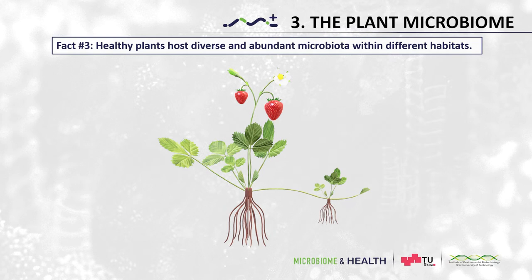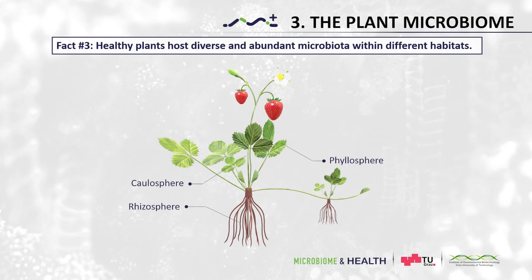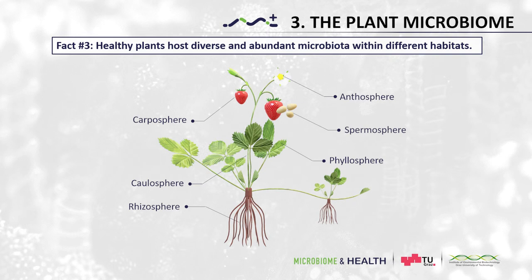The plant compartments are structured in below ground and above ground tissues. Below ground, the rhizosphere is the interface of plant roots and soil, and it represents the most diverse microbial habitat on earth. Above ground tissues are subdivided into the caulosphere (stem and bark), phyllosphere (leaves), anthosphere (flowers), carposphere (fruit), and spermosphere (seeds). Going upwards from roots to phyllosphere, the microbial diversity and abundance gradually decreases.